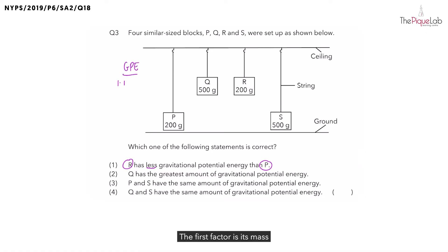The first factor is its mass, and the second factor is the height above the ground. Let's look for block P and block R. What can you say about their mass? They have the same mass of 200 grams. But what about the height above the ground?